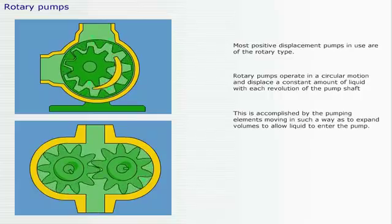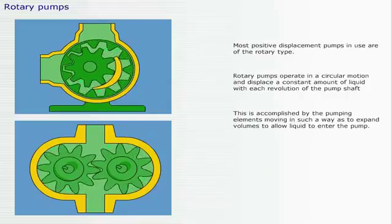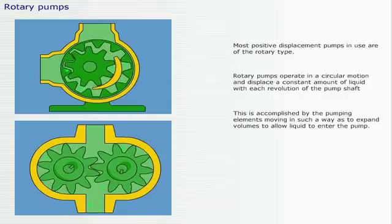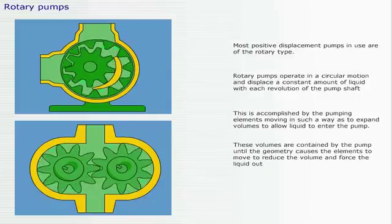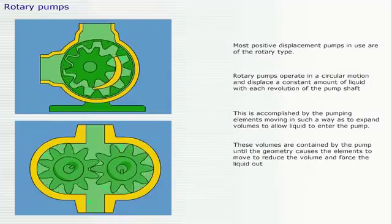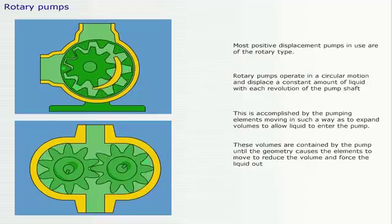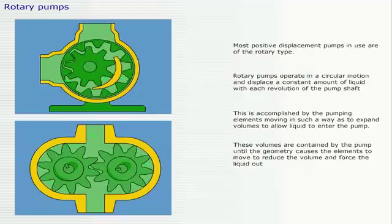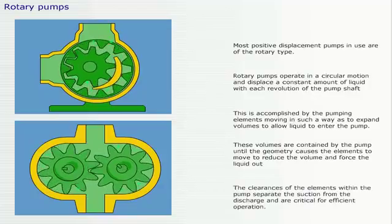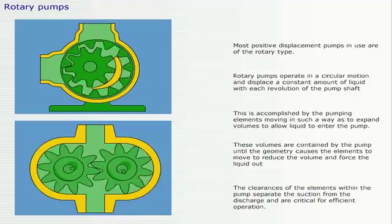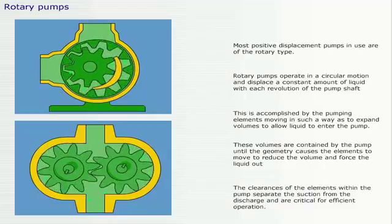This is accomplished by the pumping elements moving in such a way as to expand volumes to allow liquid to enter the pump. These volumes are contained by the pump until the geometry causes the elements to move to reduce the volume and force the liquid out. The clearances of the elements within the pump separate the suction from the discharge and are critical for efficient operation.